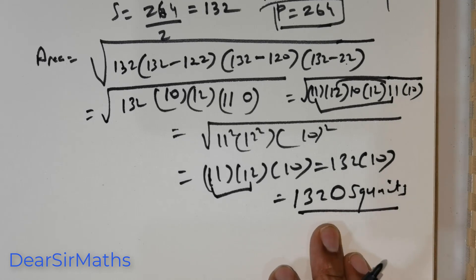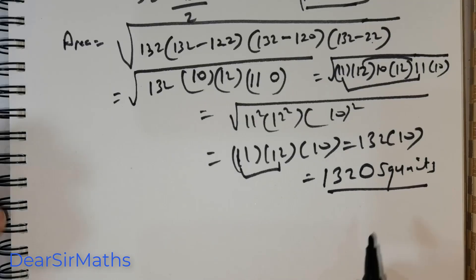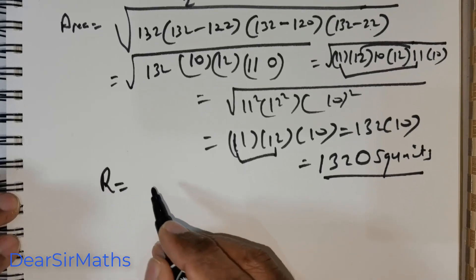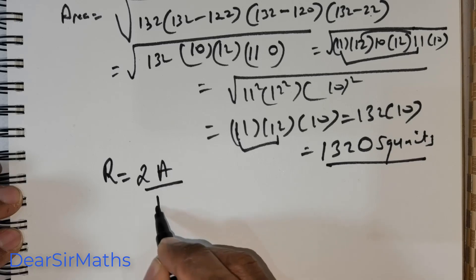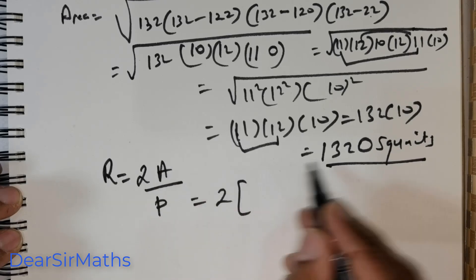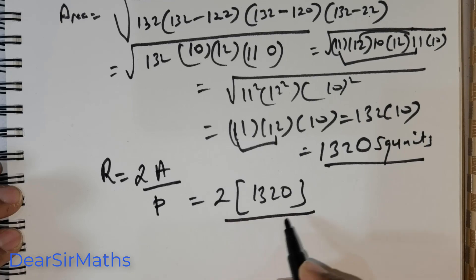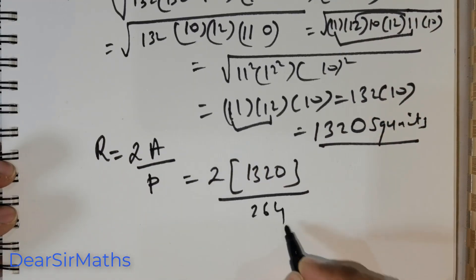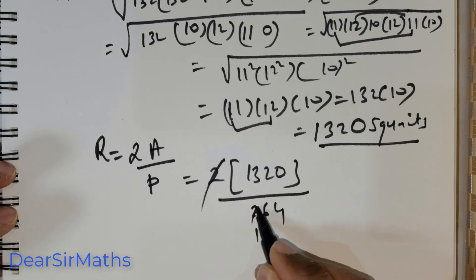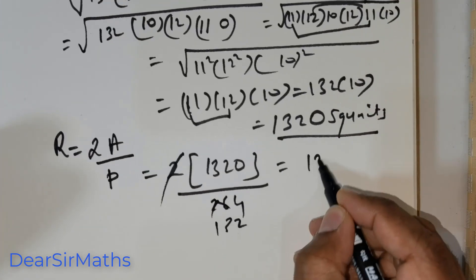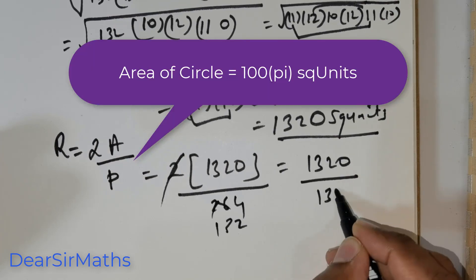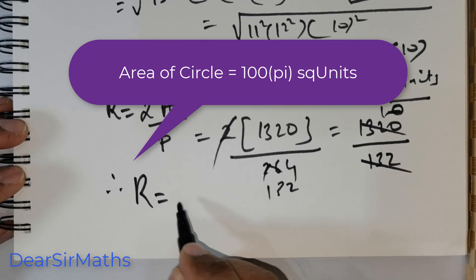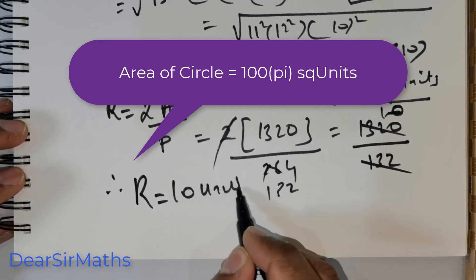But, we are interested in obtaining the radius. Okay. So, after getting the area, we need to obtain the radius. And, we have this formula, R is equal to 2 times A divided by P. Now, A is 1320. And, P is 264. 2 divides here 1, 2 divides here 3 times and 2 times. So, 1320 divided by 132. That's going to be 10. So, therefore, R is equal to 10 units.